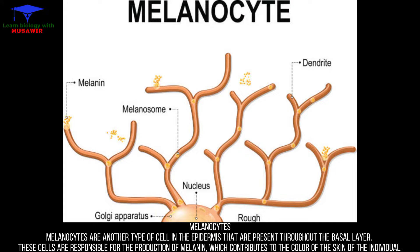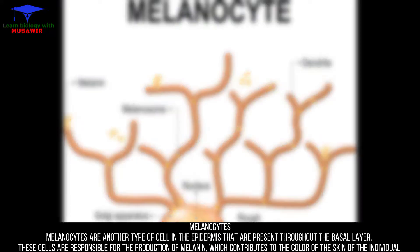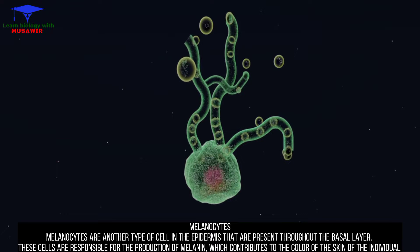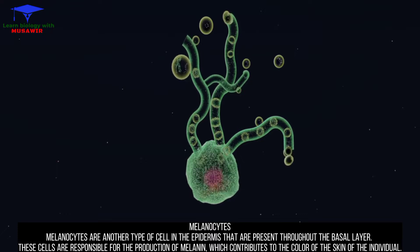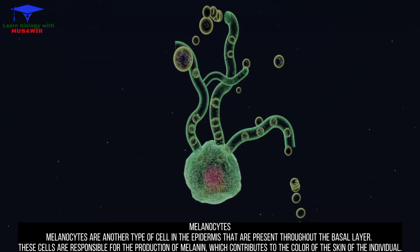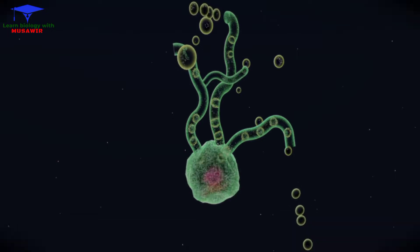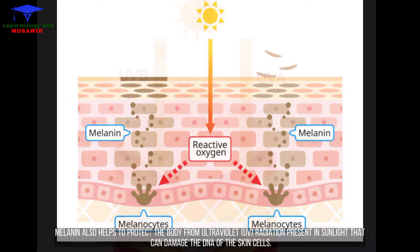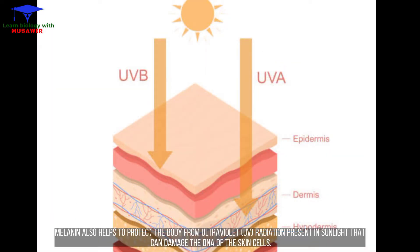Melanocytes are another type of cell in the epidermis that are present throughout the basal layer. These cells are responsible for the production of melanin, which contributes to the color of the skin. Melanocytes also help to protect the body from ultraviolet UV radiation present in sunlight that can damage the DNA of the skin cells.